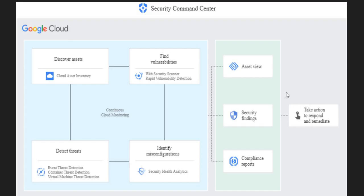Here is a simple block diagram of how Security Command Center works. It uses four different services to find vulnerabilities: Web Security Scanner and Rapid Vulnerability Detection for vulnerability scanning; Cloud Asset Inventory to discover assets like projects, VMs, and storage buckets; and Event Threat Detection, Container Threat Detection, and Virtual Machine Threat Detection for threat detection. It continuously monitors all these services and reports security findings on the dashboard so you can take action.